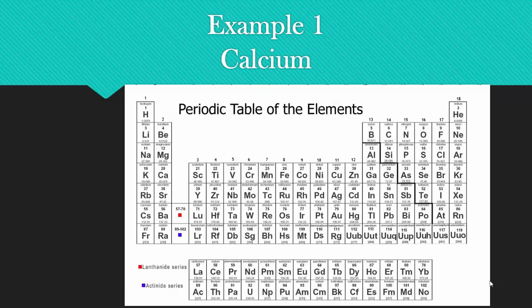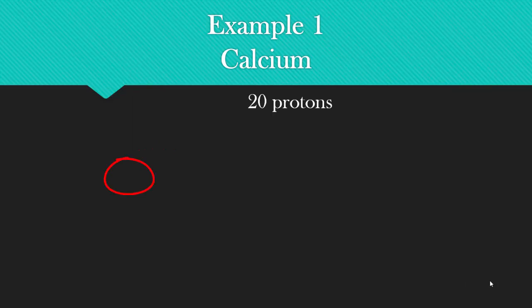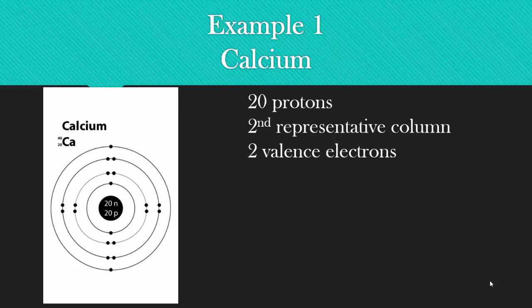Here is an example to show you what we're talking about. We'll start with calcium. When you take a look at the periodic table, you find calcium here. And you see that it has an atomic number of 20, so it has 20 protons. It's in the second representative column, so it has two valence electrons.